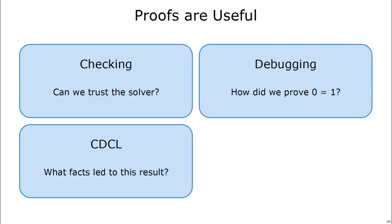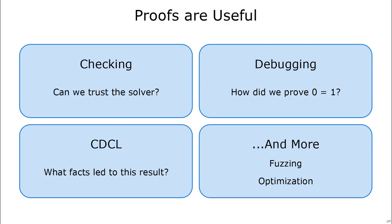Proofs are also useful in solvers for CDCL. A proof gives us a way to specify which particular facts led to result, so we can backtrack on those facts. Proofs are also useful in more applications, such as fuzzing and optimization.